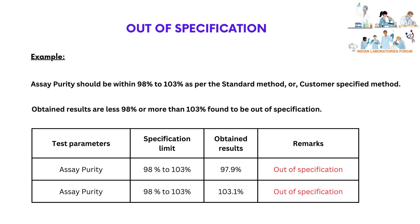To make you understand easily, please find the example. A say purity should be within 98% to 103% as per the standard method or the customer-specified method. Obtained results are 97.9% and 103.1%. Both obtained results — 97.9% and 103.1% — even though there is only 0.1% variation, both results are found to be out of specification limit.